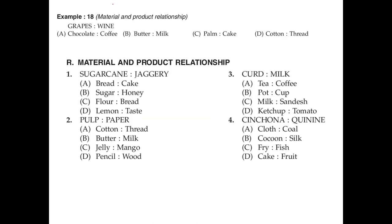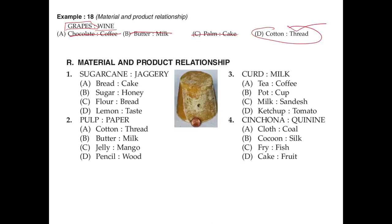Material and product: grapes when fermented give wine. We don't get chocolate from coffee. Butter comes from milk, not the other way around — so that sequence is wrong. We make bread from wheat, not cotton, so D — sugarcane and jaggery — is our right answer. Jaggery is brown sugar, also known as gur. Sugarcane is the raw material and jaggery is the product.